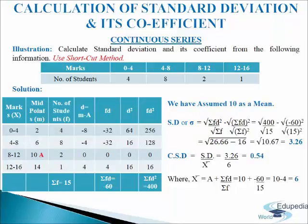In the next column we will write fd; we will multiply deviation with the frequency. So 4 into minus 8 is minus 32, 8 into minus 4 is minus 32, 2 into 0 is 0, 1 into 4 is 4. We will calculate the values and get sigma fd equals to minus 60.